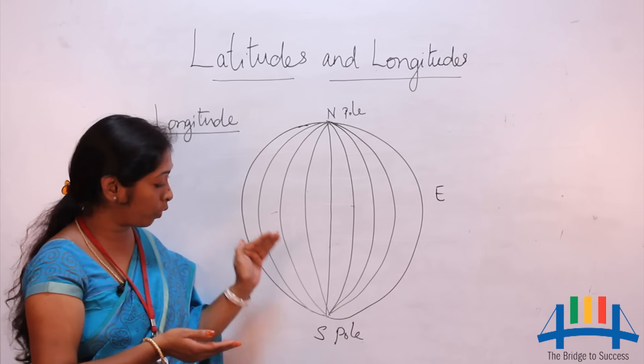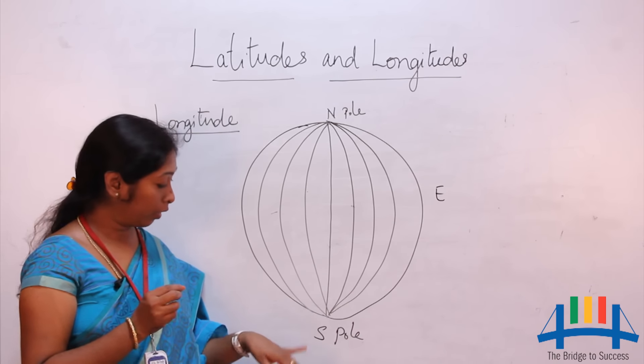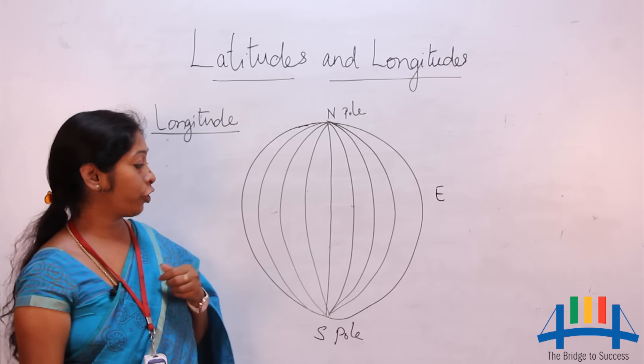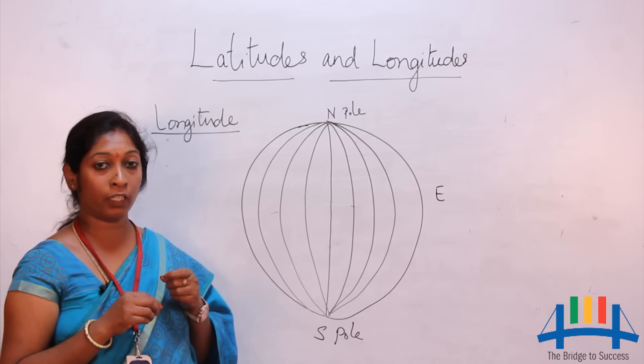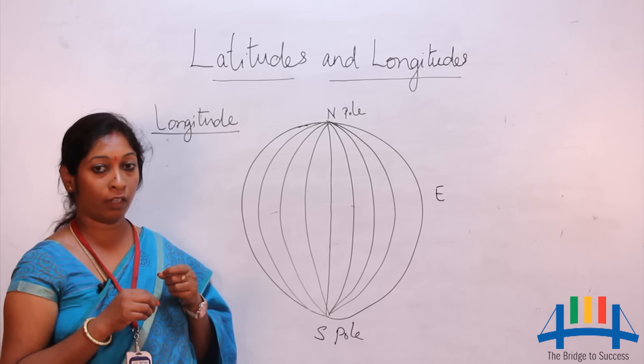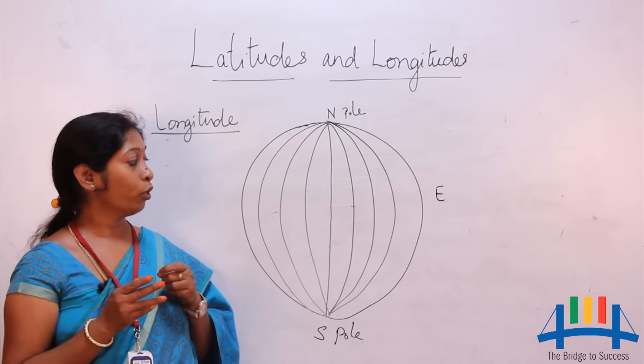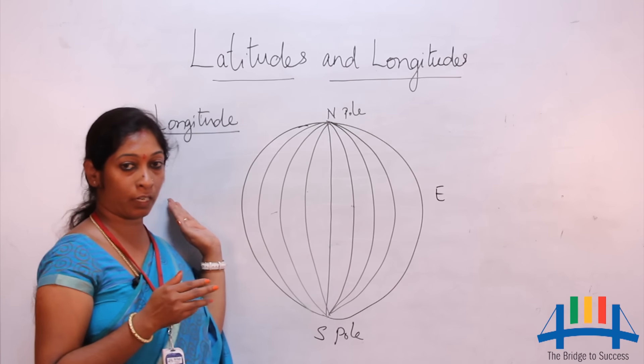As we move towards the poles, the distance between the longitudes becomes smaller. The line of meridian which passes through Greenwich in London is called the prime meridian. Its value is 0 degrees. The prime meridian divides the earth into two hemispheres: the eastern hemisphere and the western hemisphere.